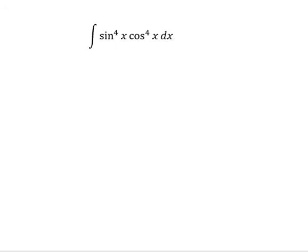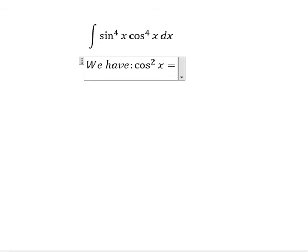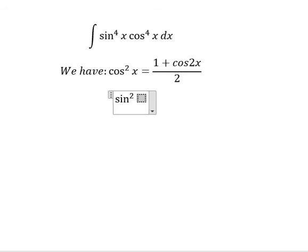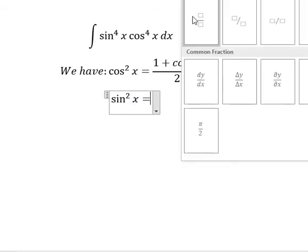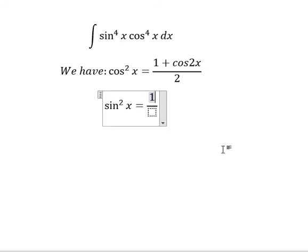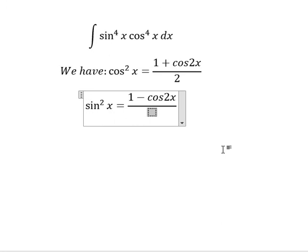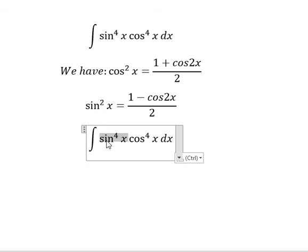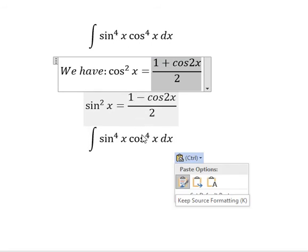We have two identities to use. First: cos s to the power of 2 equals 1 plus cos 2s, over 2. Second: sin s to the power of 2 equals 1 minus cos 2s, over 2. Now we need to use these identities. Because the original expression has power 4, and here we just have power 2, this means each of them will have power 2.